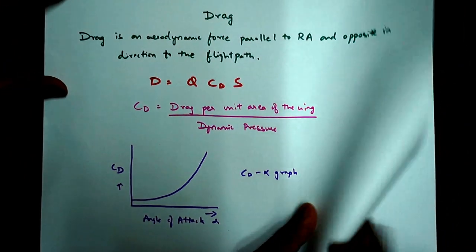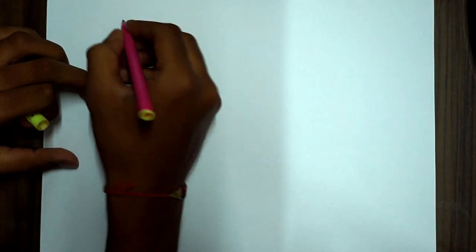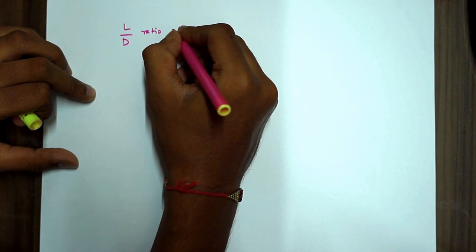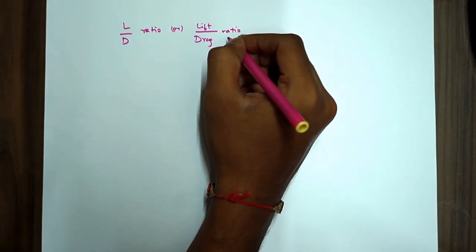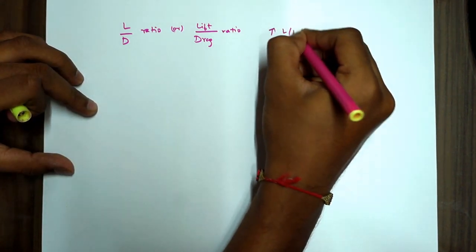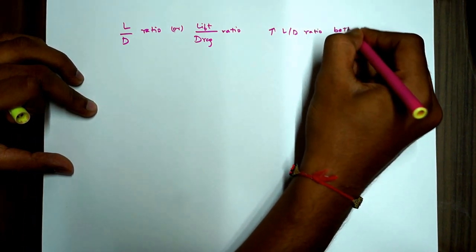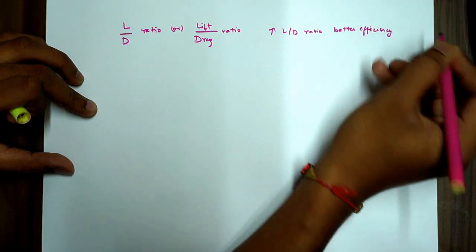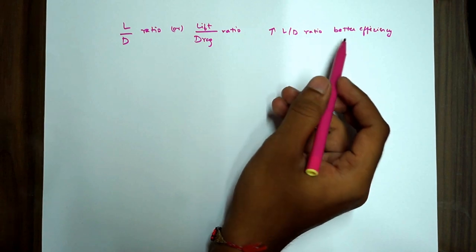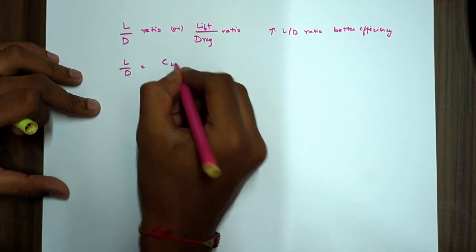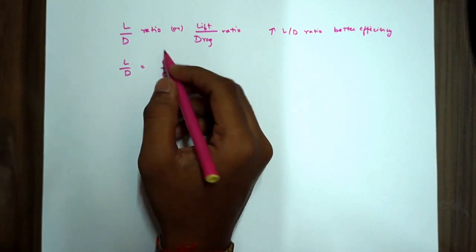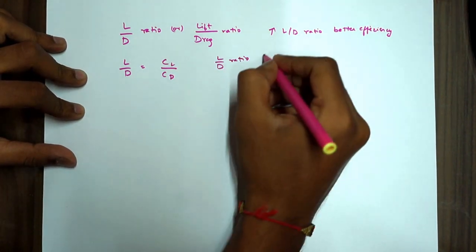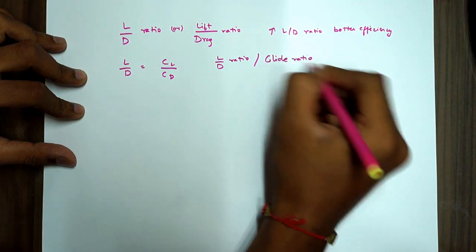So now we'll come back to what is L by D ratio. This is the important point that we are going to discuss. L by D ratio or lift to drag ratio. Basically, L by D ratio will give you aerodynamic efficiency. So higher the L by D ratio, better is your efficiency. So in general terms, L by D equal to CL by CD is the ratio between the coefficients of lift and coefficient of drag. How do you understand L by D ratio? L by D ratio is also called the glide ratio.